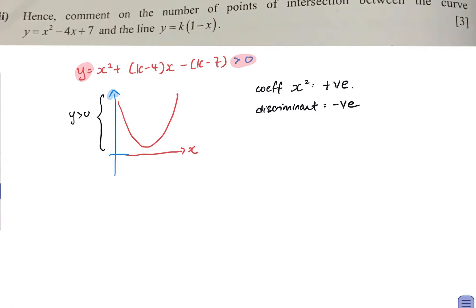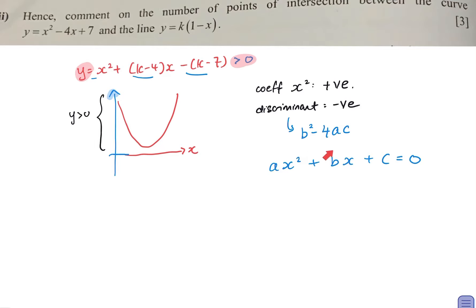Now let's look at the discriminant. Remember, the discriminant is b squared minus 4ac, where a is the coefficient of x squared, b is the coefficient of x, and c is the constant, in the form ax squared plus bx plus c equals zero.